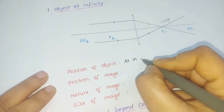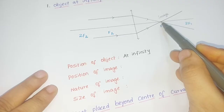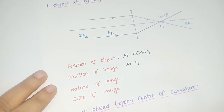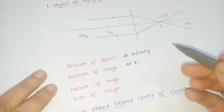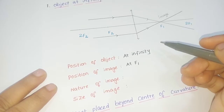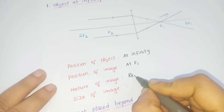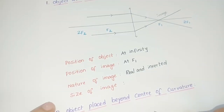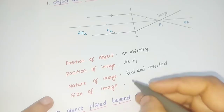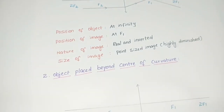Now we write down the characteristics of the image. Position of object: at infinity. Position of image: the image is formed at the focal point of the lens, that is at F1. Nature of image: a real image is formed at the focal point — real images are always inverted, so we write real and inverted. Size of image: point-sized, or it may be written as highly diminished.